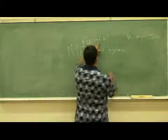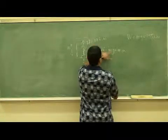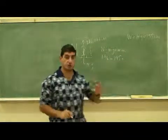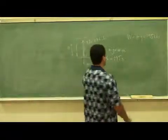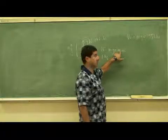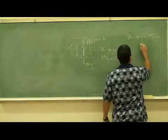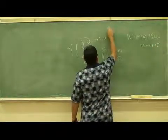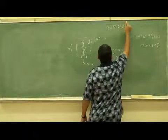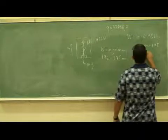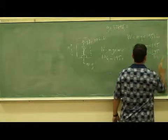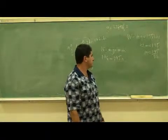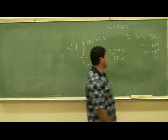We can calculate the acceleration of the elevator. The normal force was 196 and my weight is 195. In the British unit system, mass is measured in slugs and the g value is 32 feet per second squared. So my mass is 195 divided by 32.